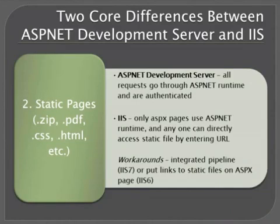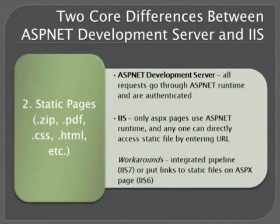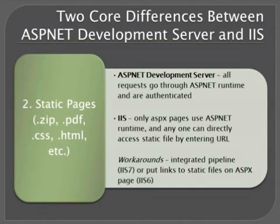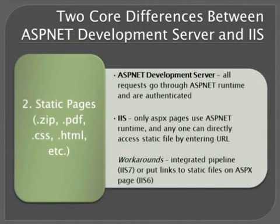There are two workarounds for this. One is, if you use IIS 7, you can use an integrated pipeline to make sure that everything goes through the ASP.NET runtime. But if you're using IIS 6, one option would be to create an ASP.NET page, put the links to your static files on that ASP.NET page, and then put the ASP.NET page in a secure folder. That way, they can only get to the ASP.NET page by going through web forms authentication, and then once they get there, they can click on the links to get to the static files.